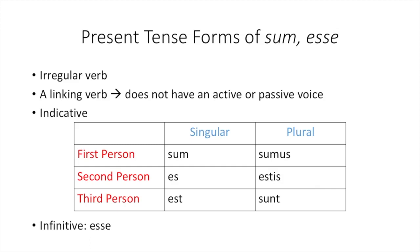So we can add these to our chart. You already know that est is your third person singular form. Here are the other forms: es is second person singular, you are; sumus is first person plural, we are; estis is second person plural, y'all are; and the third person plural, sunt, they are. Please make sure you've copied this down, and then resume the video to talk about how we translate this verb.